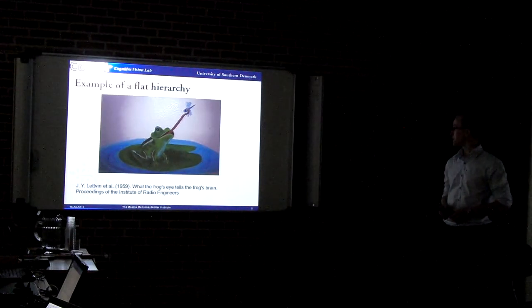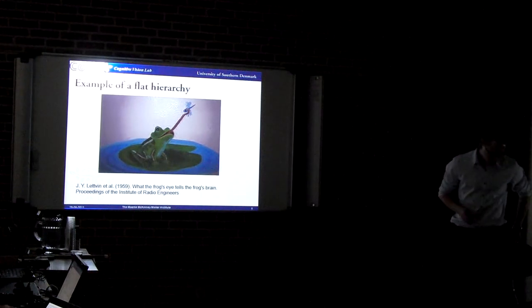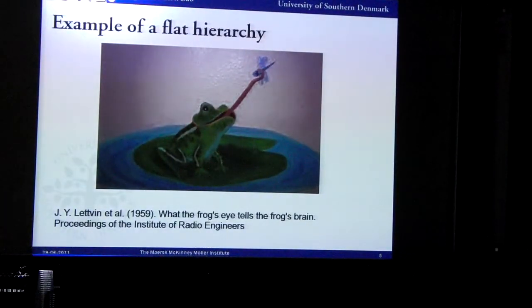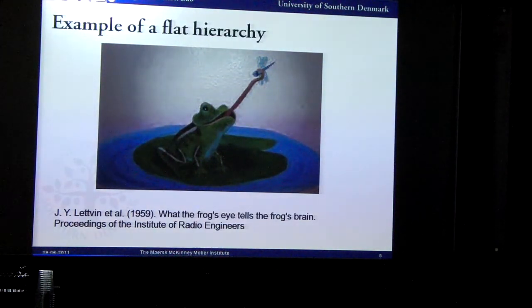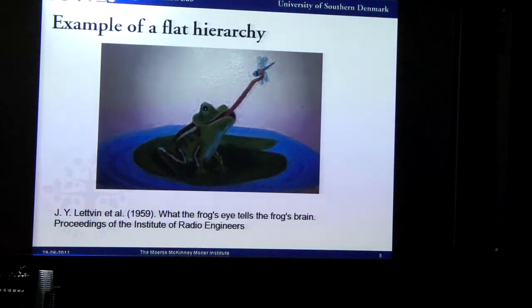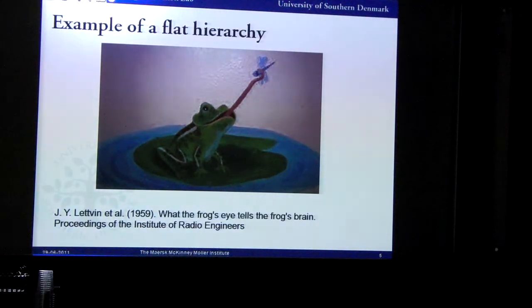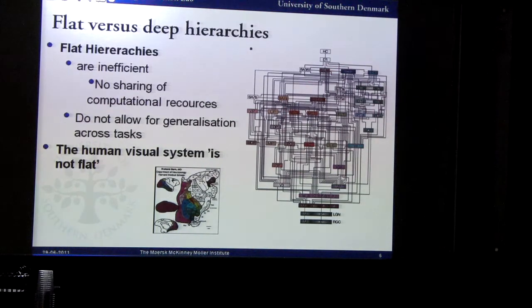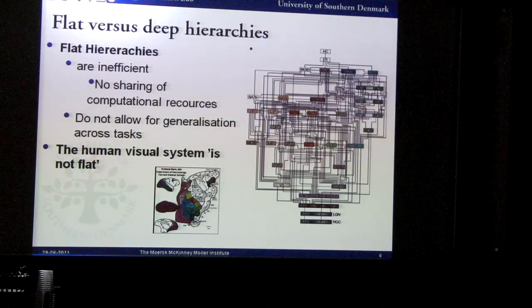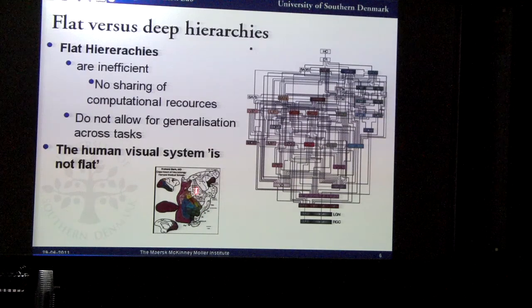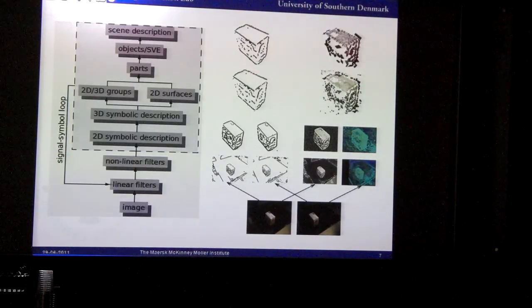This is an example of a flat hierarchy to illustrate. In biology, the frog has a fly detector built into its eye with a direct inclination that reflexes in the tongue — a nice example of a very short pathway and a very dedicated solution only to catch the fly with no brain interaction. The human system is not like that; we have a lot of connections. Flat hierarchies in humans would be very inefficient as we could not share computational resources — so it's definitely not flat.